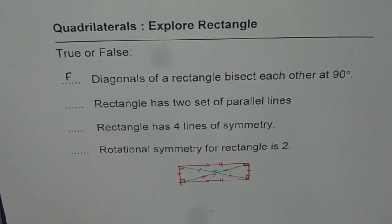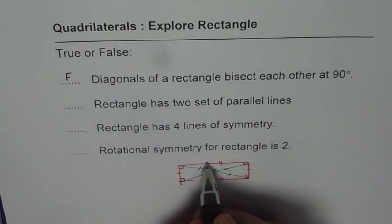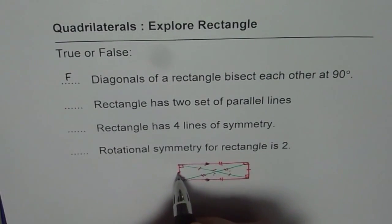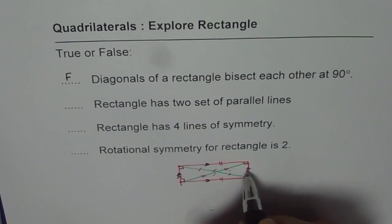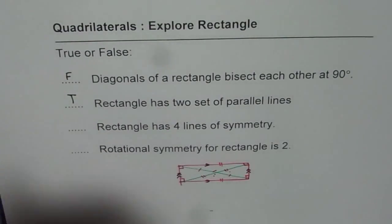Next is, rectangle has two set of parallel lines. That is correct. One set is right there and the other one is the width of the rectangle. That is true.